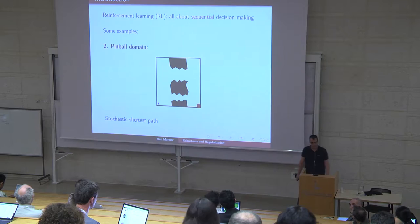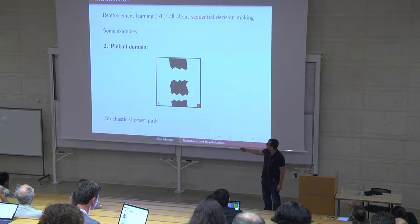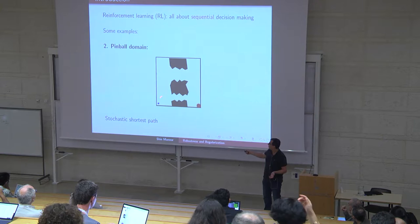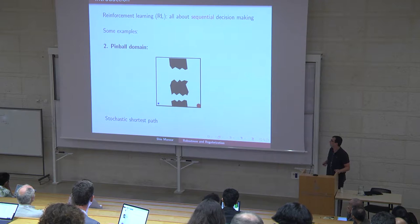That's a more classical domain — the pinball domain. In the pinball domain, there is a red ball, a blue ball, and a red target. You want to push the blue ball to the red target, so you have to push the table. You control the dynamics somewhat and want to make sure the blue ball gets to the red dot — it's really a stochastic shortest path problem. So we'll look at those two problems.